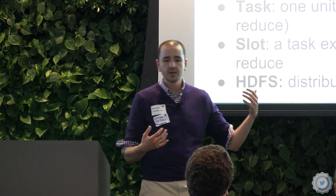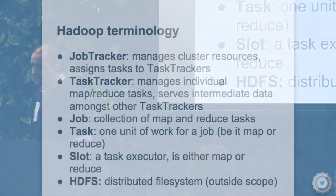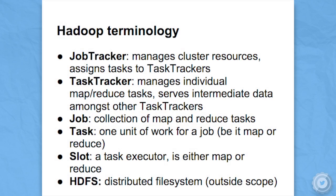Before I dive into more detail on the Hadoop scheduler, I want to cover some basic terminology. In the Hadoop world, the job tracker is the master of the MapReduce side — it manages individual jobs and assigns job tasks to the task trackers. You submit jobs to the job tracker. The task tracker manages the individual tasks assigned to it and also serves intermediate data amongst the other task trackers. A task is one unit of work for a job, and a slot is a task executor on a task tracker. HDFS is the other half of MapReduce, but I'm not really going to go into that.